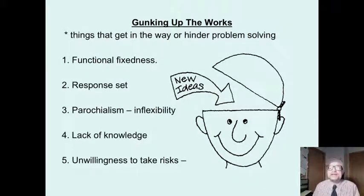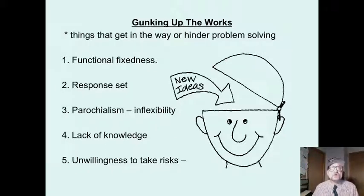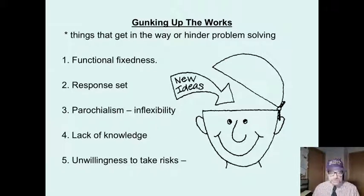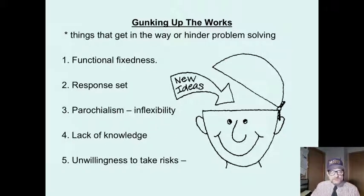Things that get in the way or hinder problem solving. First of all is functional fixedness — that is, you have a problem and you can see only one use for something. For example, you see a screwdriver and you can't imagine any other use for it other than to screw in holes.